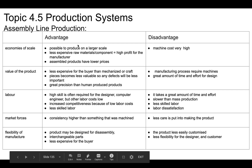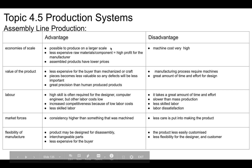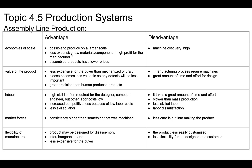Machine costs are really high, but you can have really high volume and it's going to cost less. So that means higher potential profits for the manufacturer and assembled products that have lower prices. It can be less expensive for the buyer, but the manufacturing process requires machines and there's a greater amount of time and effort in the design, which becomes a difficult thing.